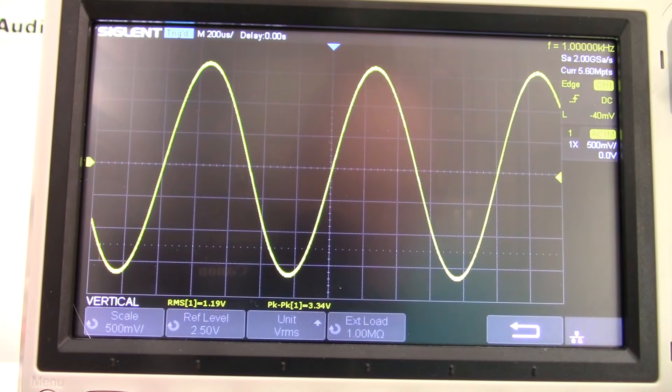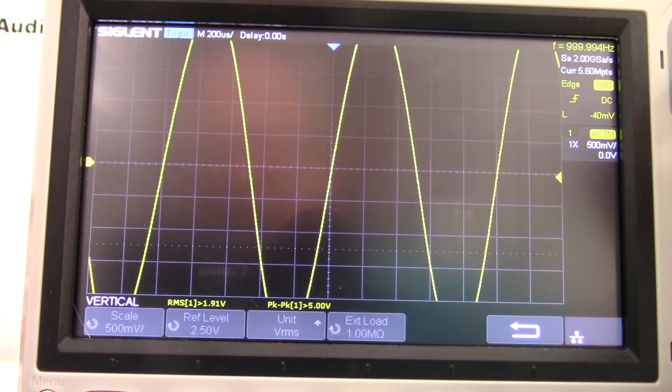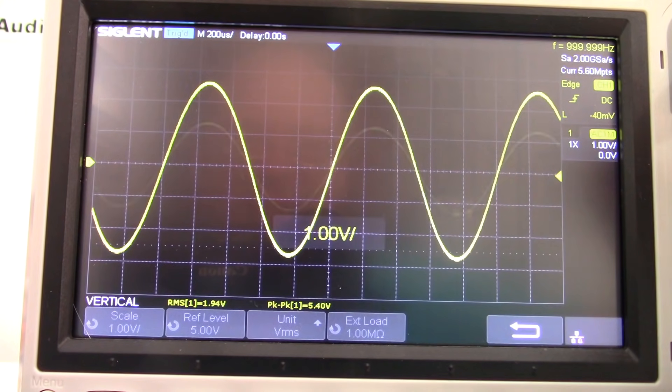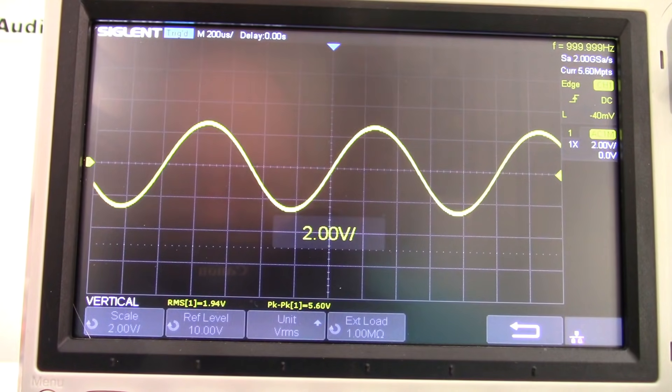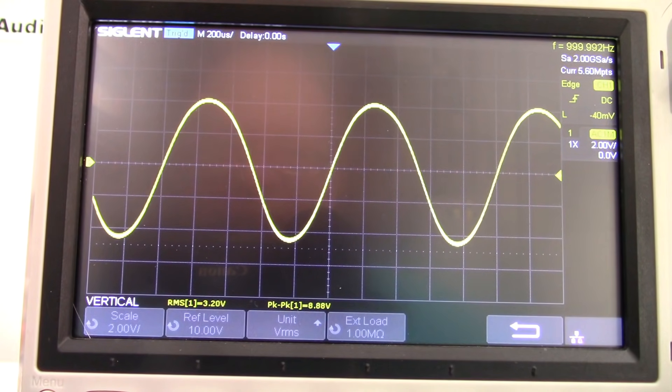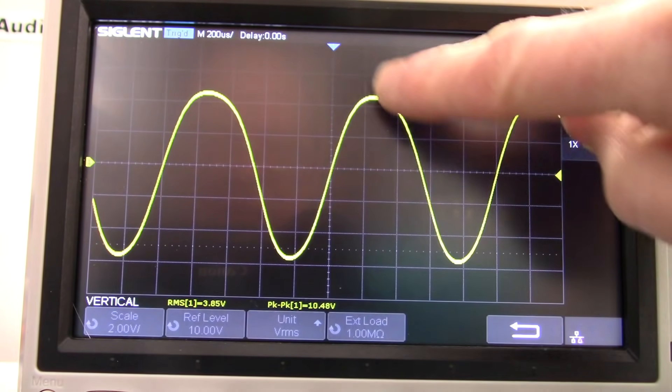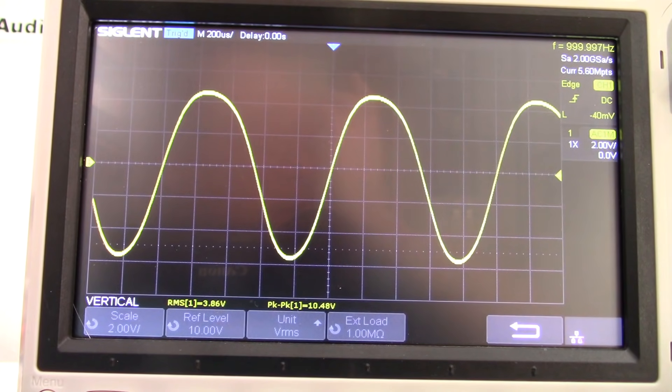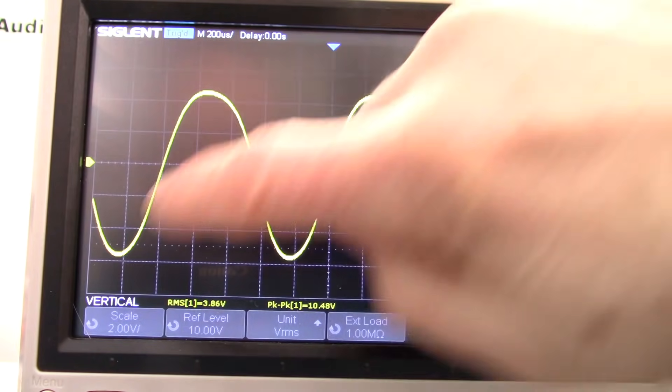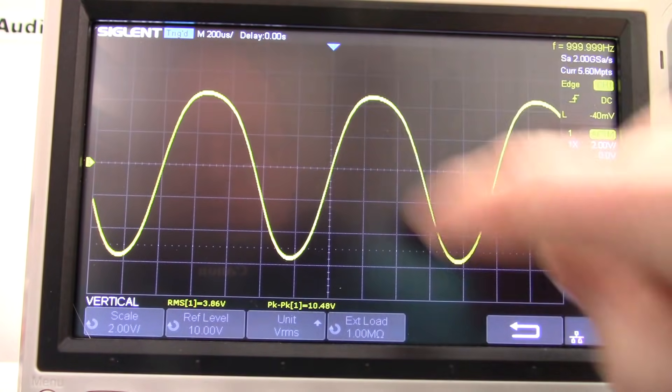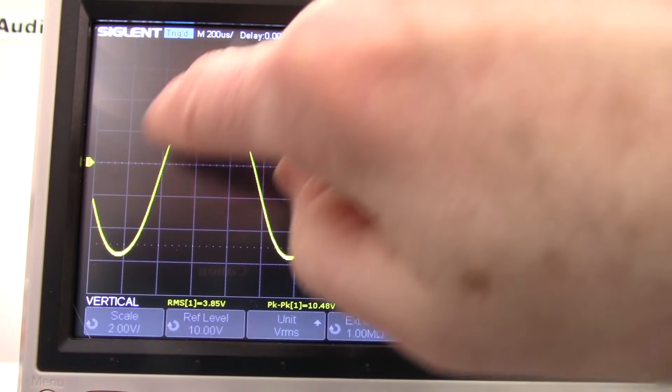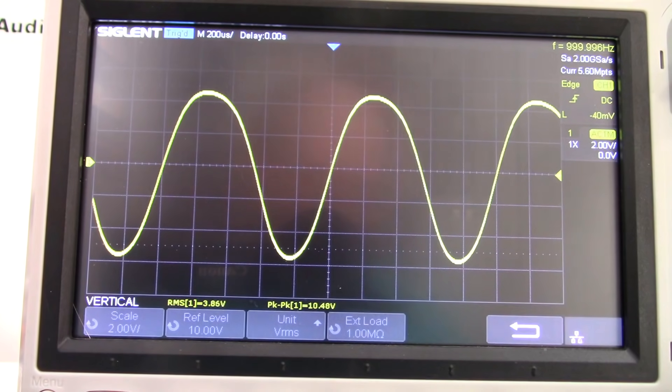So, we have a nice sine wave there. So, let's crank this guy up. Now, look at that. There's our distortion. At high levels, you can see that second order distortion where it gets rounded on top and pointy on the bottom. It's getting close to clipping.